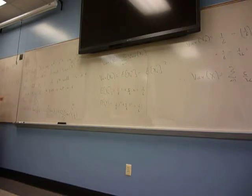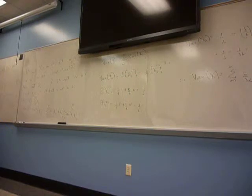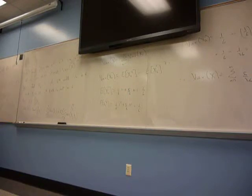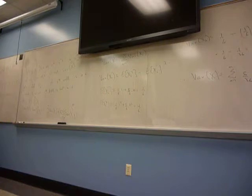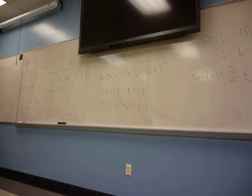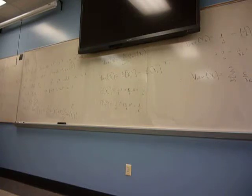I want you to use this trick for problem 36. For problem 36, X is the number of ones and Y is the number of twos that occur in n rolls of a fair die. You can write X as the sum of X_i's and Y as the sum of Y_i's. But of course your X_i and Y_j need not be independent — they can't be one and two at the same time.